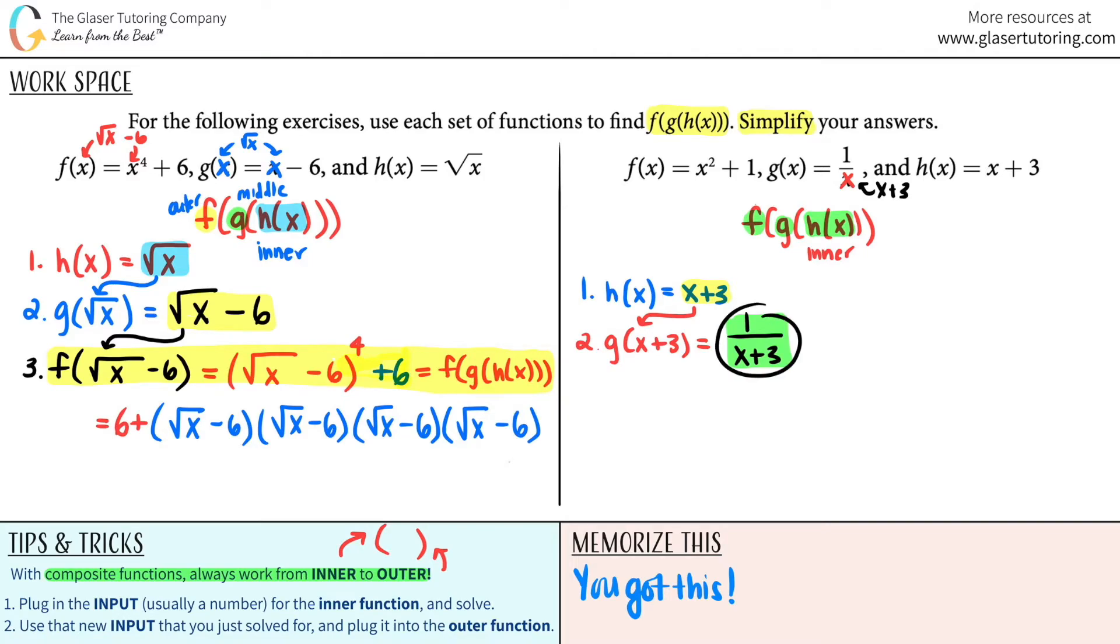And now I will use this to plug in for the outermost function, which is the f function. So this is number 3. This is f of input this 1 over x plus 3. So the f function was just x squared plus 1. So it would be this whole thing, 1 over x plus 3 squared plus 1. Now this one is a little bit less time consuming than the other one. So I will simplify this one for you.